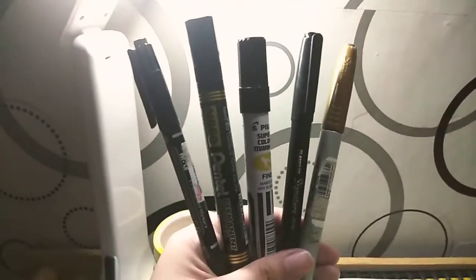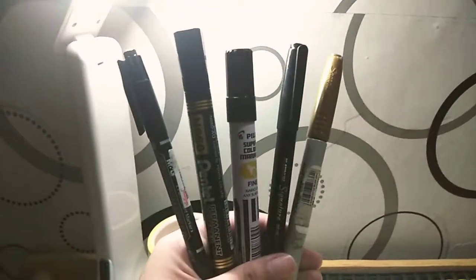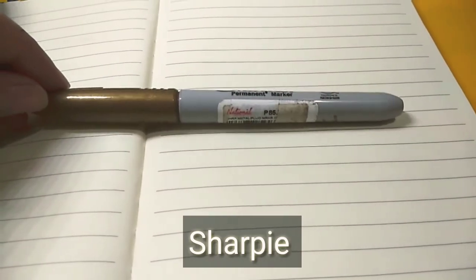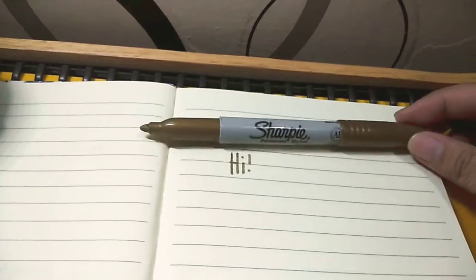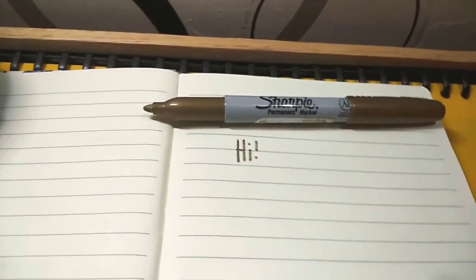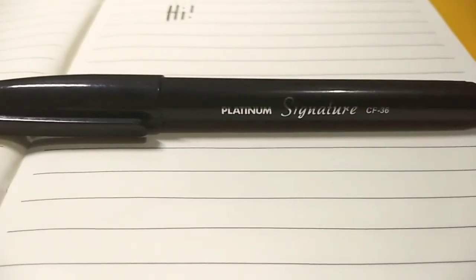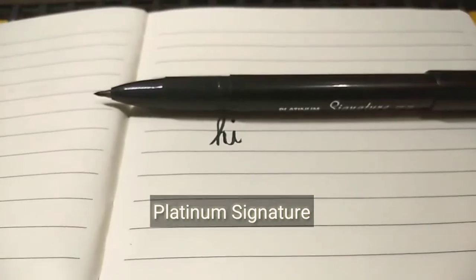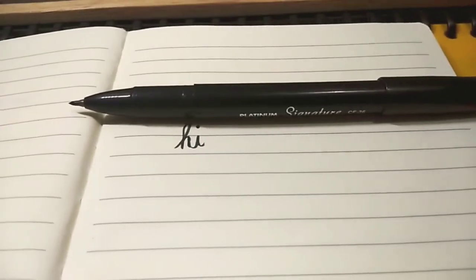Next are these markers. The first one is the Sharpie permanent marker in gold. Next is this Platinum signature, I think it's a ballpoint or marker. I don't know, but I also love this.